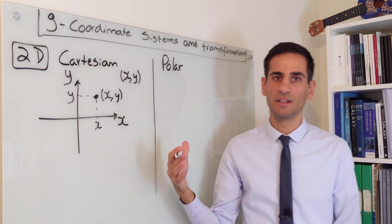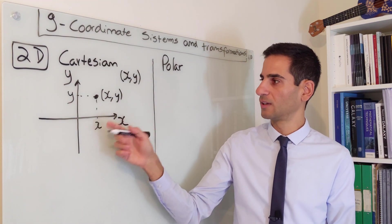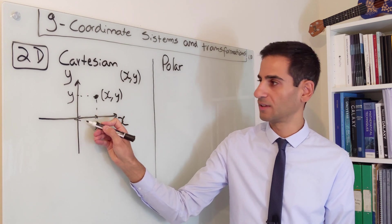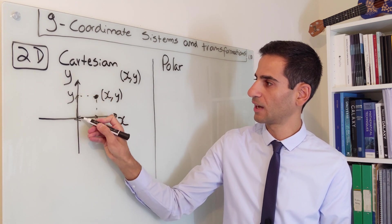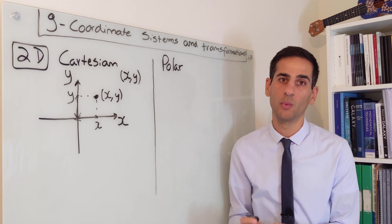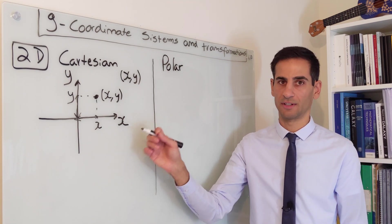In Cartesian 2D systems, we look at the distance from the center in both x and y, and we have a unique way to identify a point.